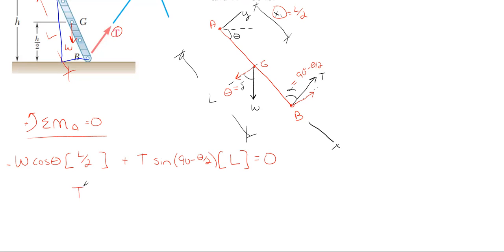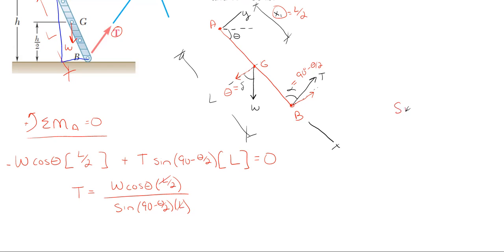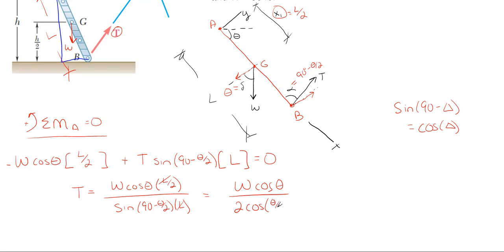Rearranging in terms of T: T equals W cosine(theta) times (L/2), all divided by sine(90 minus theta/2) times L. The L's cancel, the factor of 2 moves to the denominator, and since sine(90 minus θ/2) equals cosine(θ/2), T simplifies to W cosine(θ) divided by 2 cosine(θ/2). And that is your first answer for the tension value in variable format based upon the dimensions in the picture given.